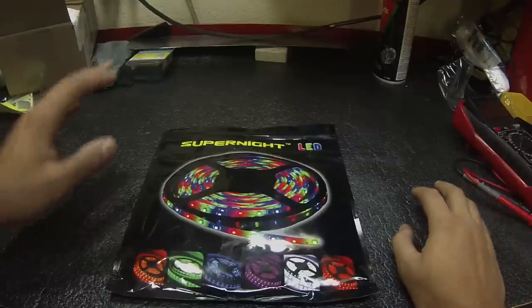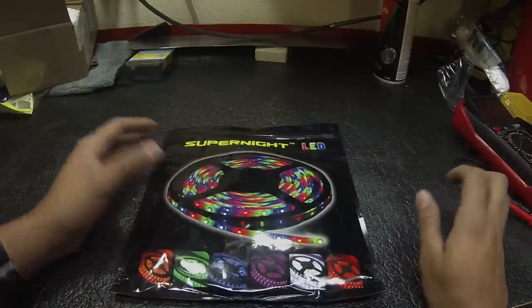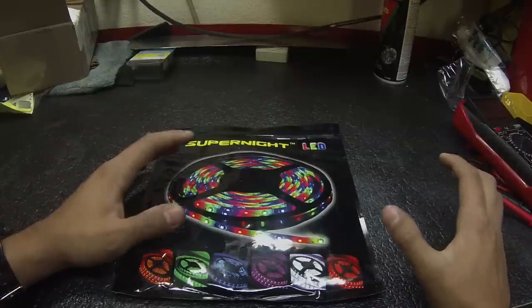Hello YouTube. Today we're going to be talking about LED strips. Specifically, we're going to be talking about RGB style LED strips, which stand for red, green, and blue.